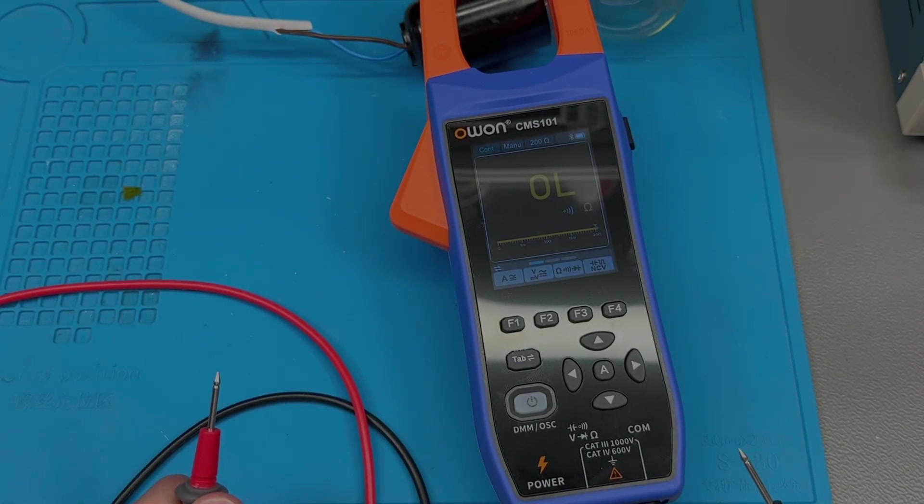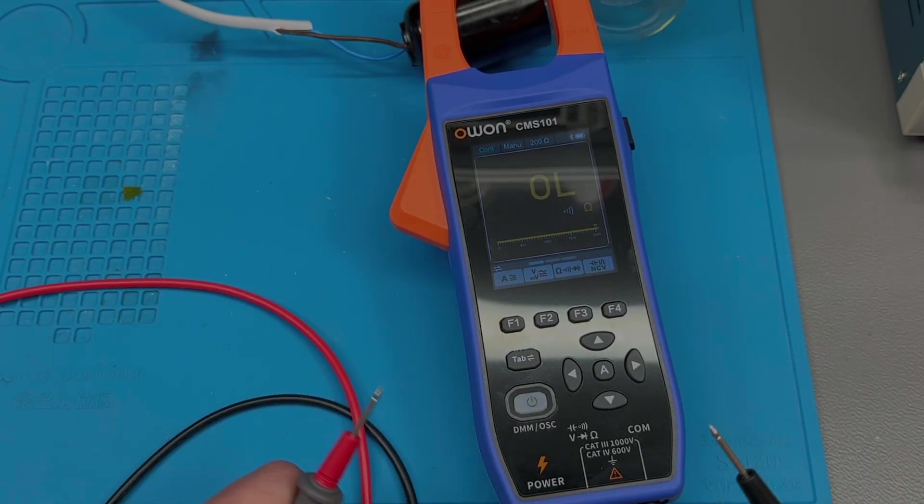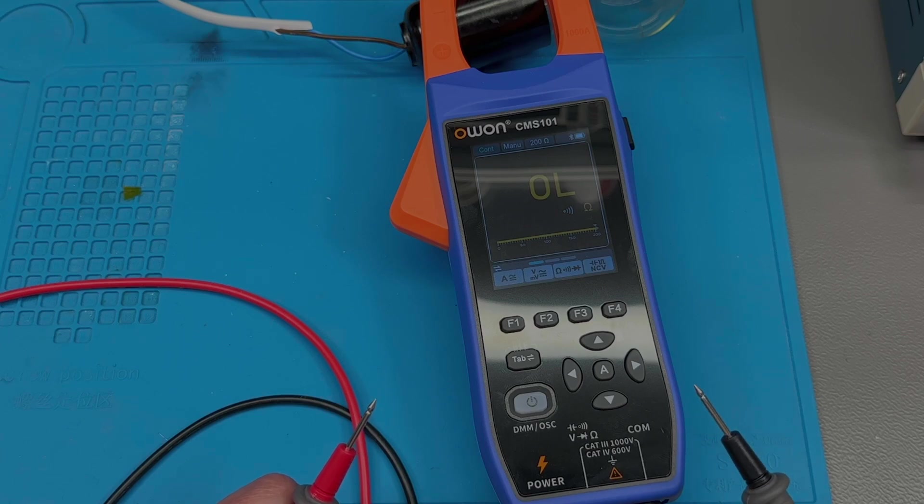The diode test is rated for 3 volts, so it should have no problem even with testing white LEDs which have a higher forward voltage.